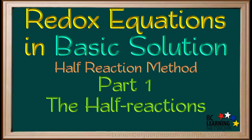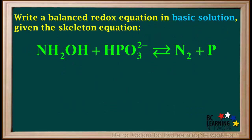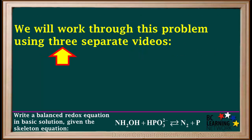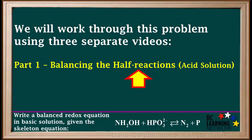Here we'll go through an example of balancing a redox equation in basic solution using the half-reaction method. We're asked to write a balanced redox equation in basic solution given the skeleton equation NH2OH plus HPO3 2- gives N2 plus P. We will work through this problem using three separate videos. In this video, part 1, we'll split the skeleton equation into two half-reactions and balance them in acid solution.